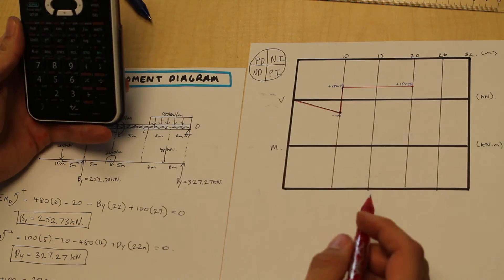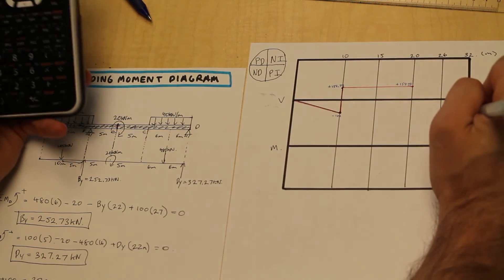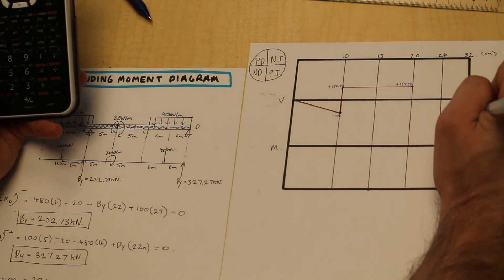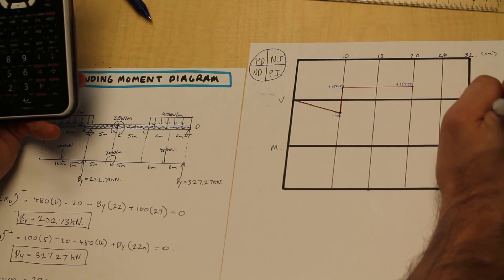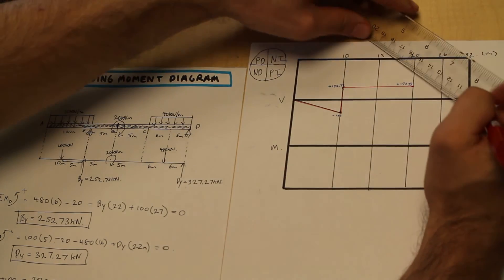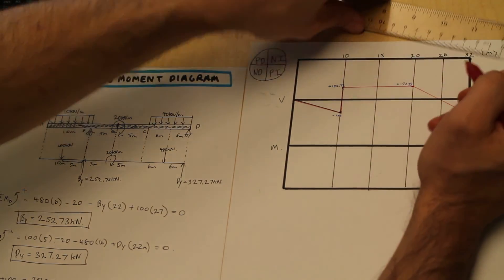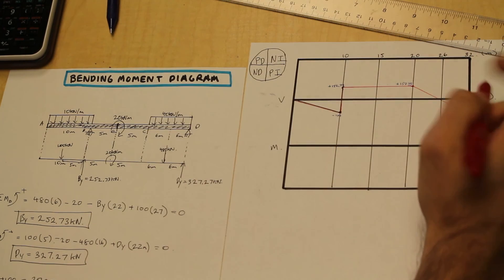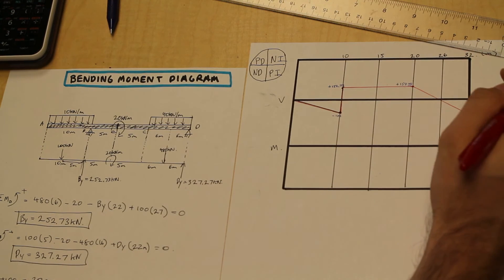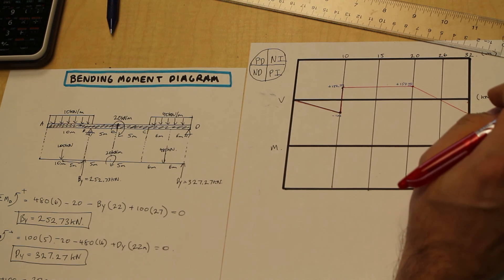And that's going to give us negative 327.27. Not exactly to scale, but that's okay. All right. And we're going to connect our line to that point straight across. And as a general check, obviously, it has to go back to zero. Otherwise, the beam would be moving around and that's unacceptable. The moment and the bending diagrams always have to go back to zero.